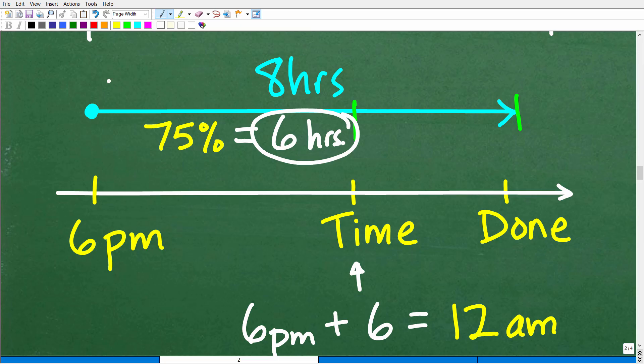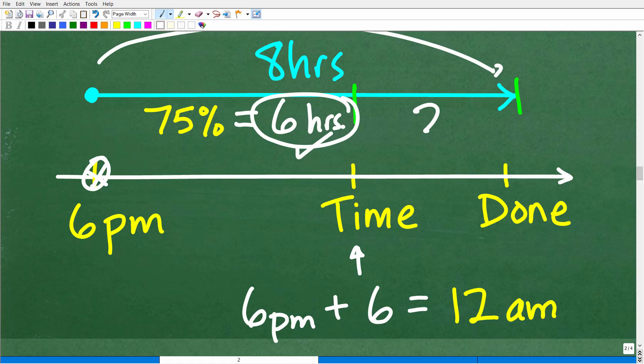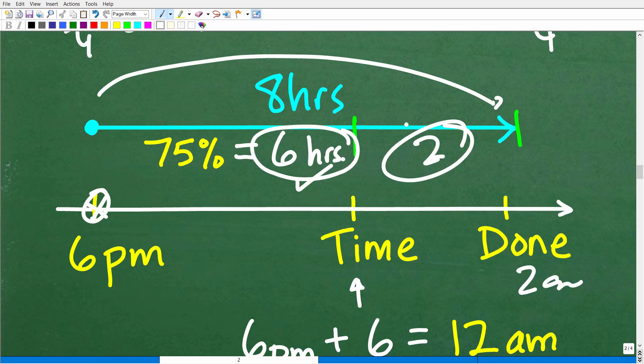So we just figured out that 75% of your shift worked is 6 hours. So what time is it? Well, if you're at 6 p.m. and you worked 6 hours, that's going to be 6 plus 6 or 12 a.m. midnight. You have 2 more hours to go. As long as you figure this out in your brain, and there's probably infinitely many other ways that you could have thought about this.